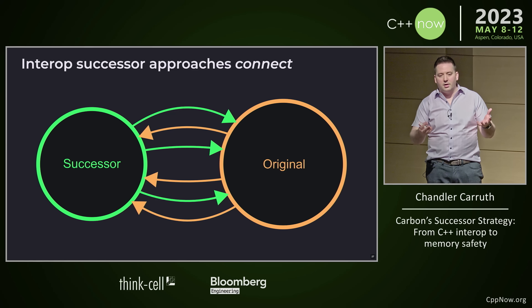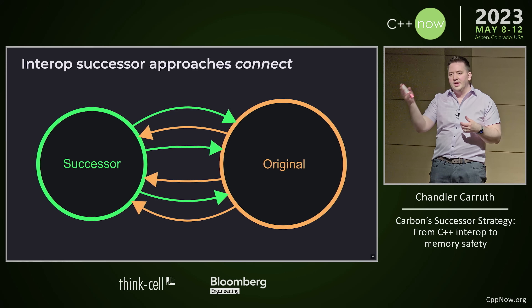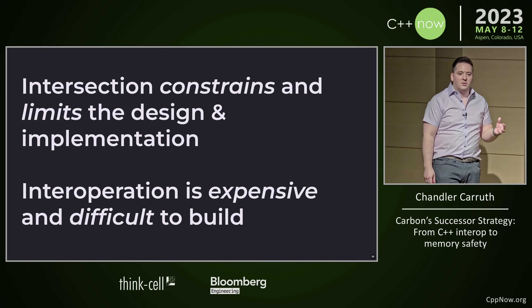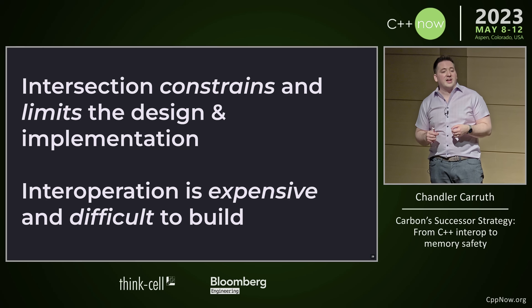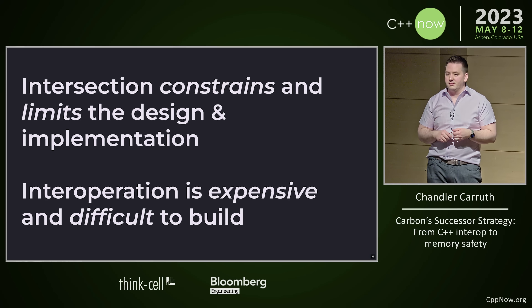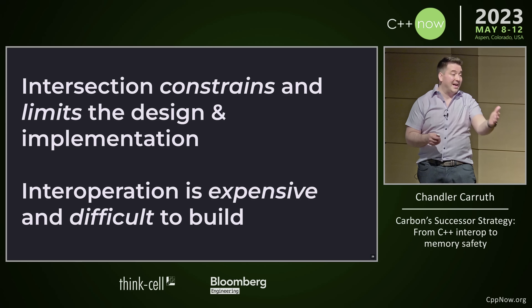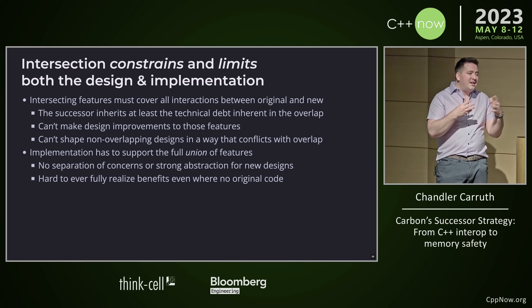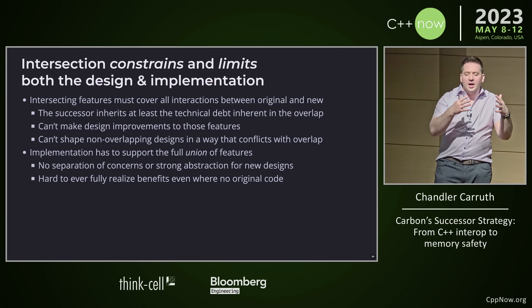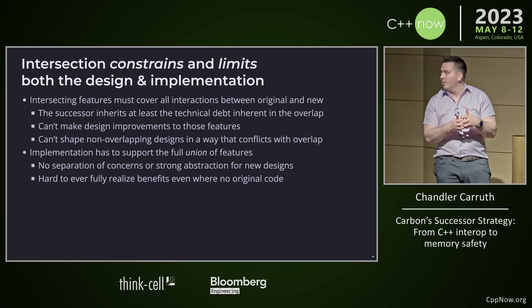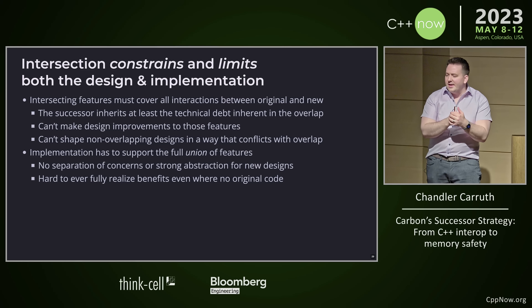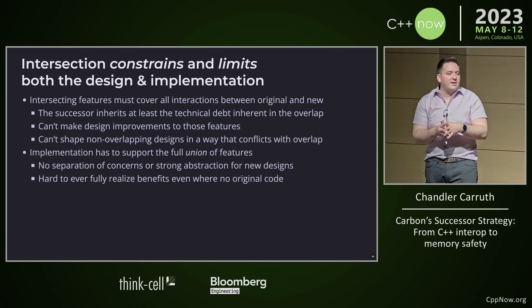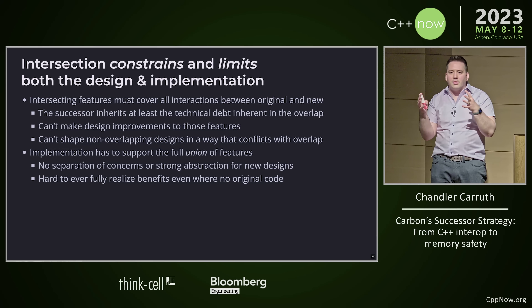This shows us the fundamental trade-off between intersection and interop. With intersection, we're ending up constraining and limiting the design and implementation of the successor — we start from something. But when we use interop, we get a very expensive and difficult-to-build solution. We don't have a lot of constraints, we can do almost anything, but we have to pay for it. The intersecting features have to cover all of the ways your two languages are going to interact, so this intersection can be hard to keep small, and you can't really mess with it — you can't reduce your technical debt.